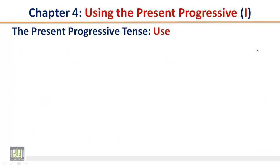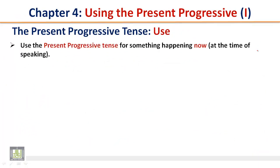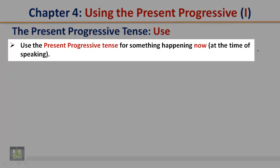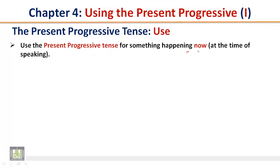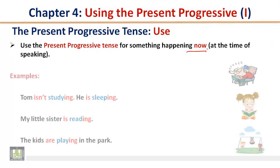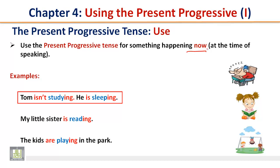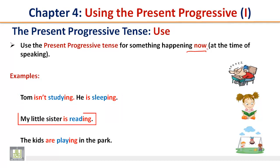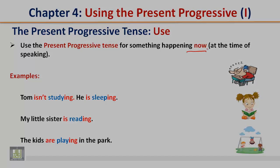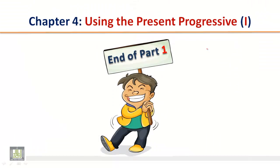The present progressive tense — use. Use the present progressive tense for something happening now, at the time of speaking. Examples: Tom isn't studying — he is sleeping. My little sister is reading. The kids are playing in the park. End of part one.